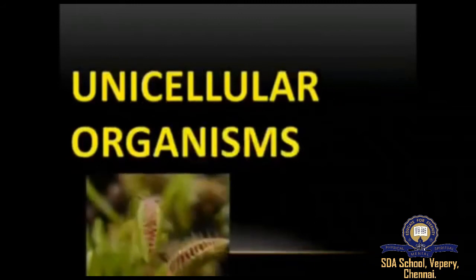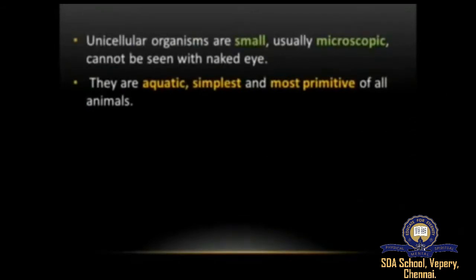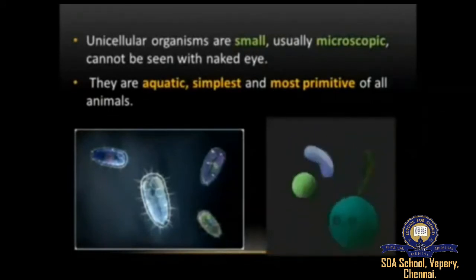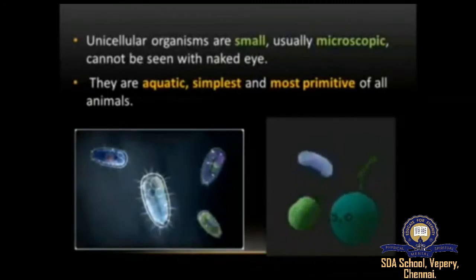Unicellular organisms are organisms made up of only a single type of cell. They are very small, usually microscopic — they cannot be seen with the naked eye. They are mostly aquatic, and are the simplest and most primitive of all animals. The word 'primitive' refers to the earliest age or period, and also refers to the characteristics of an early stage of development.